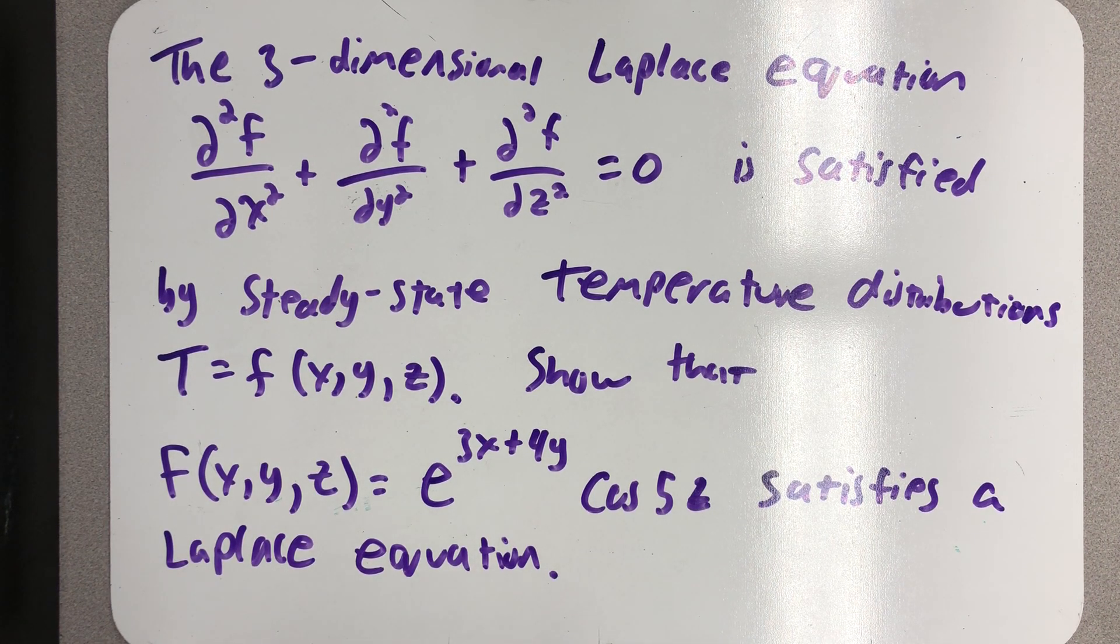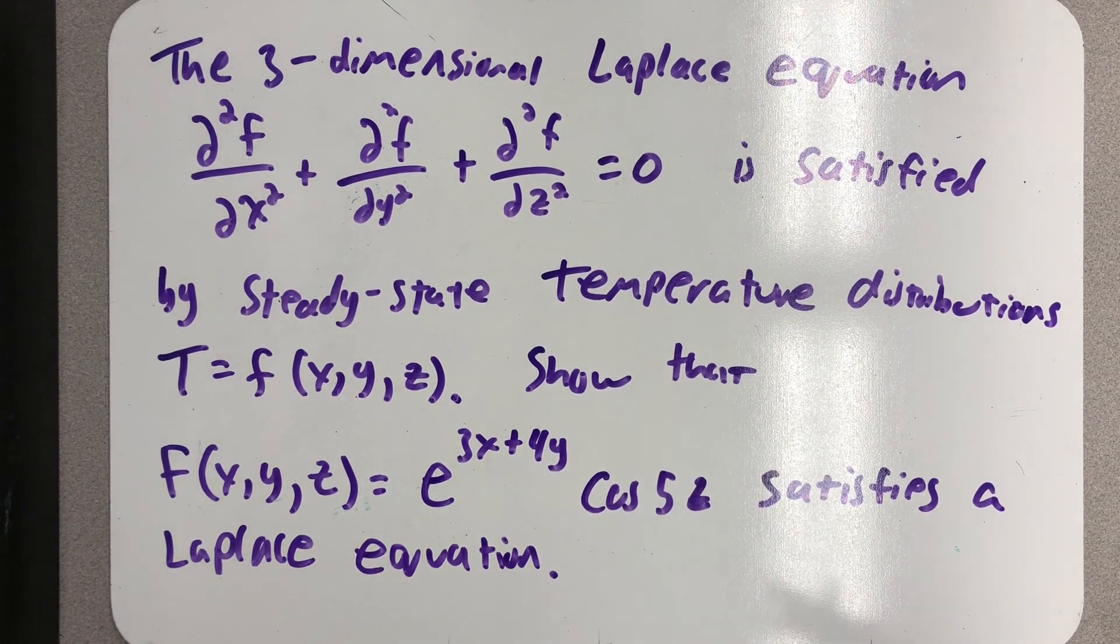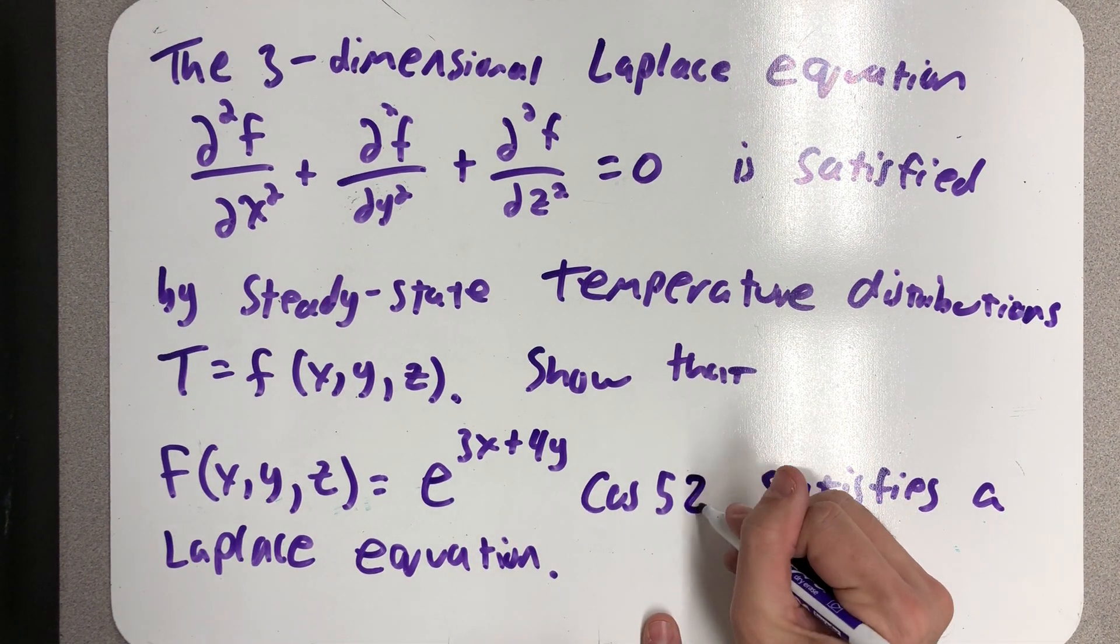This is satisfied by a steady-state temperature distribution T = f(x,y,z). Show that this particular function of three variables, e^(3x+4y) times cosine of 5z, satisfies the Laplace equation.